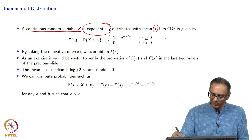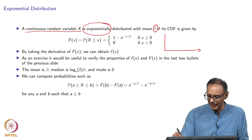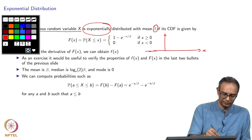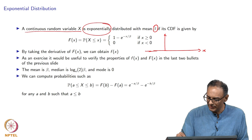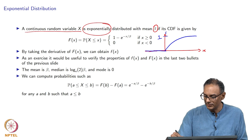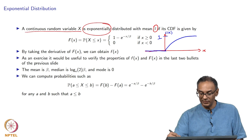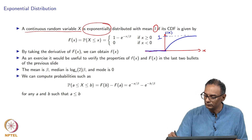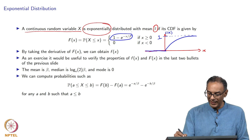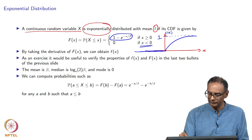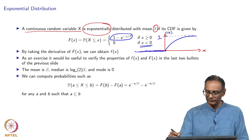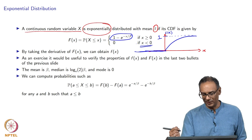The CDF of the exponential distribution: if you plot F(x) versus x, it starts at 0 and increases, asymptotically approaching 1. The expression is: F(x) = 0 when x < 0, and F(x) = 1 − e^(−x/β) when x ≥ 0 — hence the name exponential distribution.